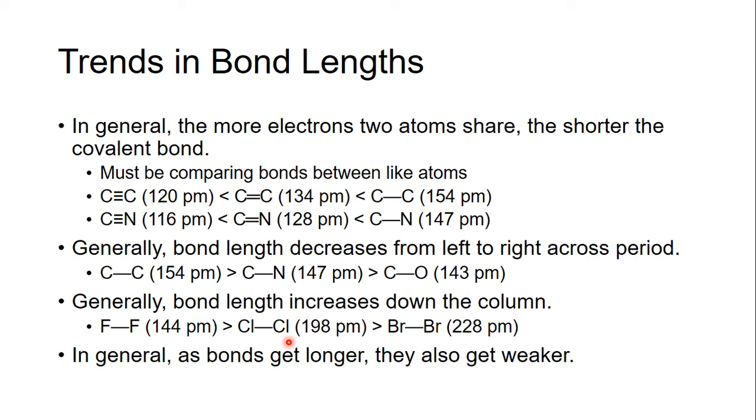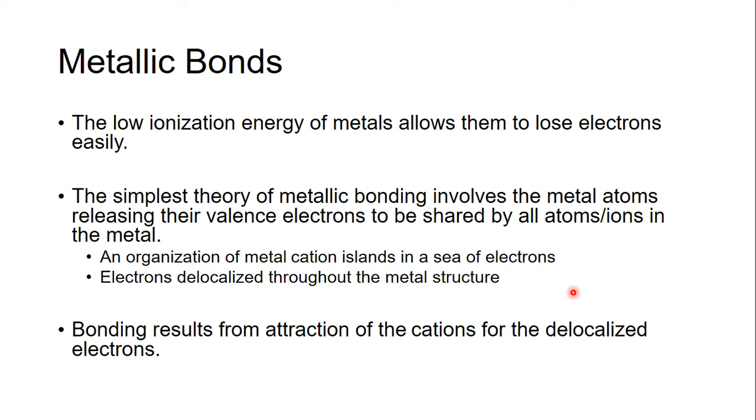And the longer a bond gets, the weaker it will get as well. Now, the only type of bonds we really haven't covered in this class yet are metallic bonds. So we covered covalent, we covered ionic, and the last type of bond we're going to look at are metallic bonds, that is, in a metal. And so metallic bonds are unique in that they're not covalent, and they're not ionic.